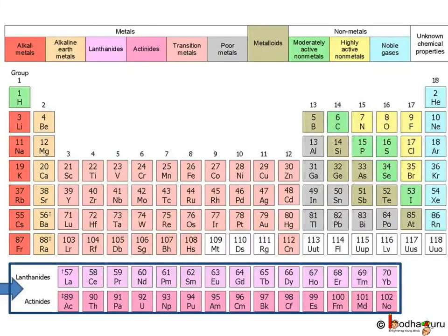In Mendeleev's periodic table, transition elements were included with other elements, whereas in the modern periodic table, transition elements are placed in a separate block. Remember the Actinide series and Lanthanide series.